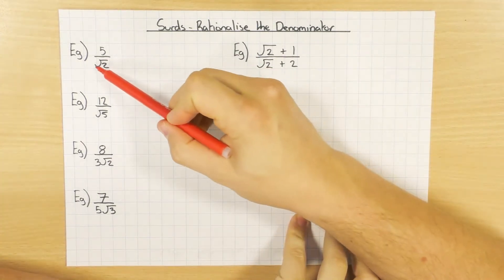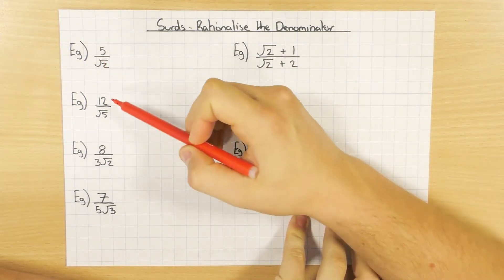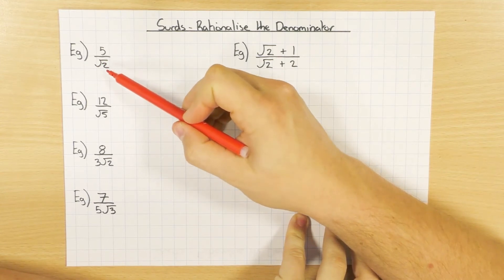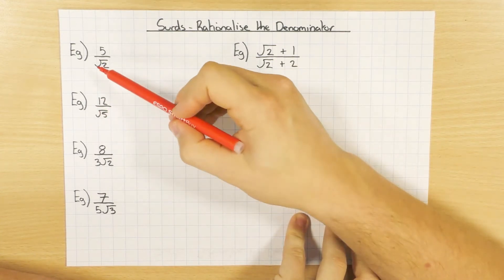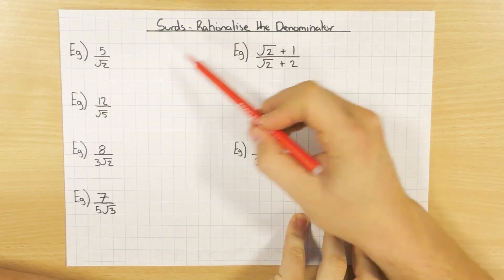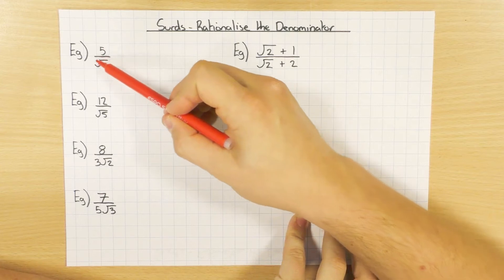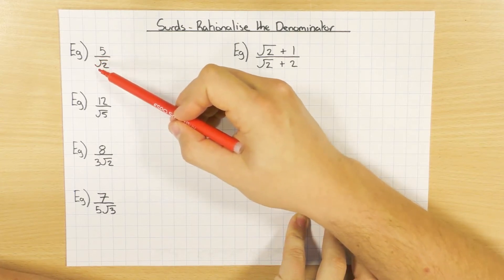But essentially, what a surd is, it's when it's a square root and the answer is an irrational number, basically not a whole number, so it has decimal places. And what we want to do is rationalize it. So essentially what I want to do is make this denominator, the number at the bottom of this fraction, a whole number.